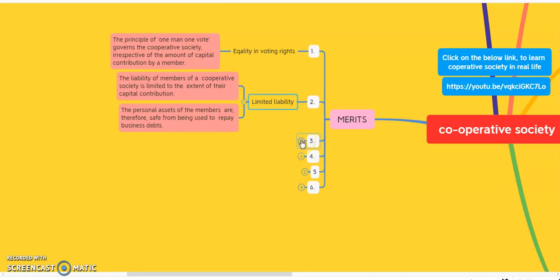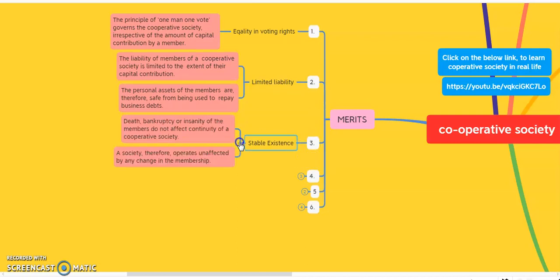The next merit of the cooperative society is stable existence. The coming and going of members does not affect the existence of the cooperative society. Death, bankruptcy, or insanity of the members do not affect the continuity of the cooperative society. A society therefore operates unaffected by any change in membership.